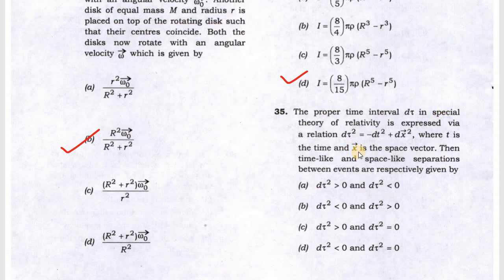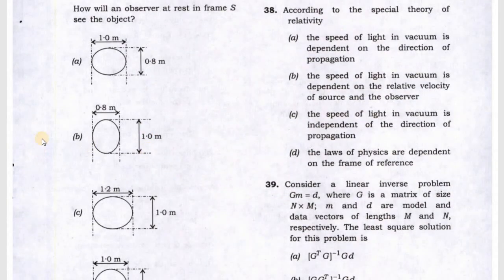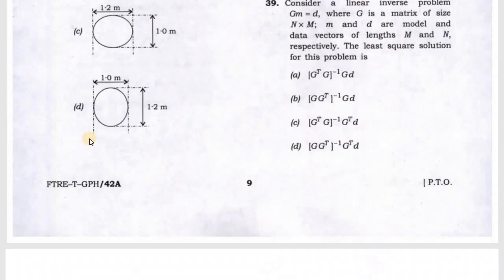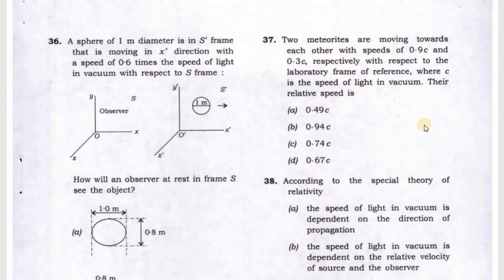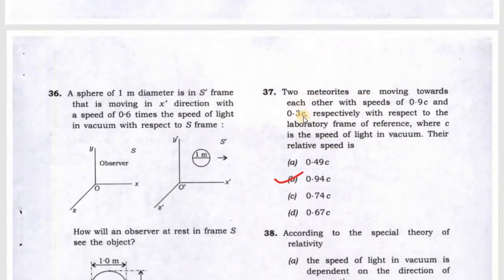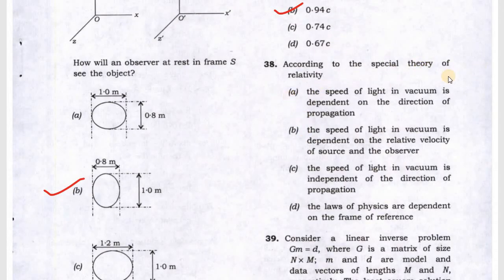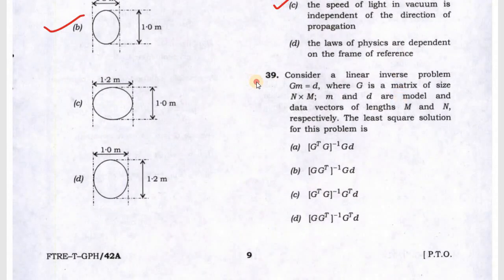Question 35: they are asking about a relativity question on proper time. Next, timelike and spacelike separation. Next, again a relativity problem, and it will be B will be the answer. Again a relativity problem, and it will be B answer. Next question: according to the special theory of relativity, this will be C answer. The speed of light in vacuum is independent of the direction of propagation.